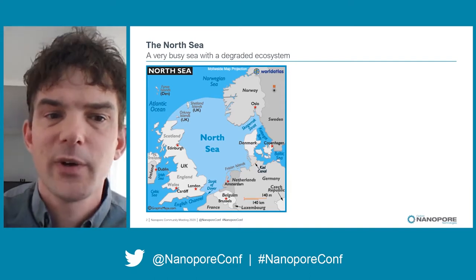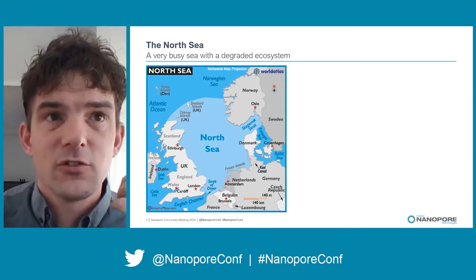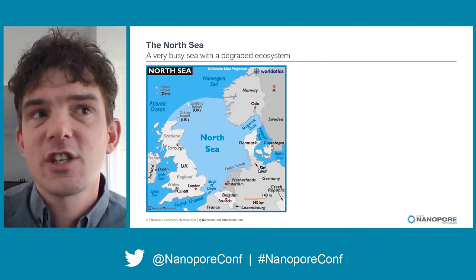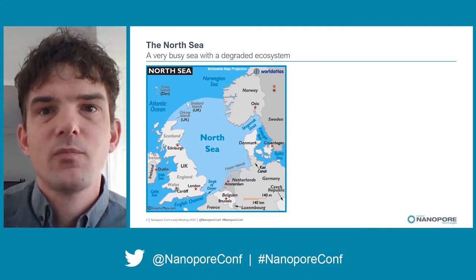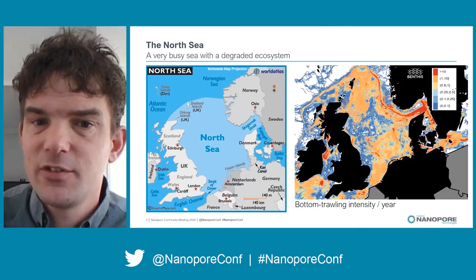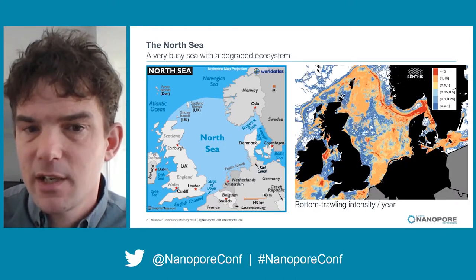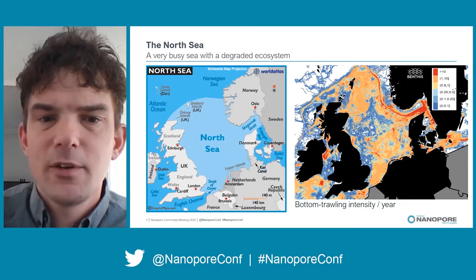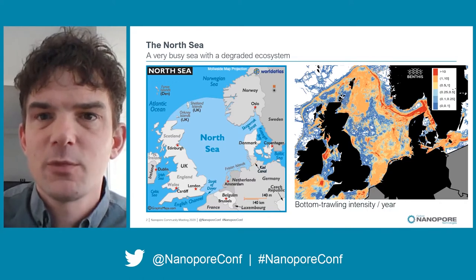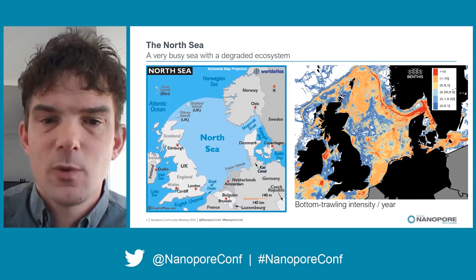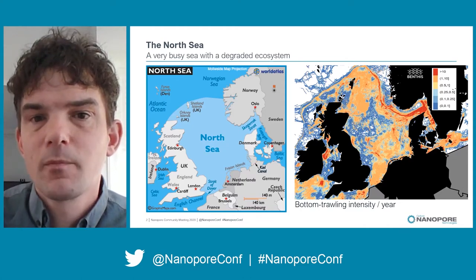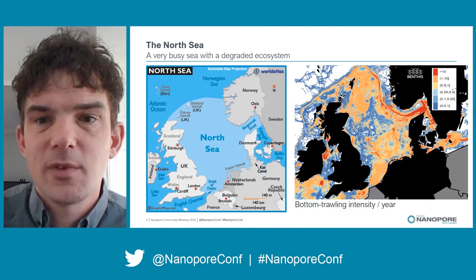There's a lot of shipping, oil and gas drilling, and a lot of fishing going on. All this together has led to the ecosystem of the North Sea being pretty degraded. Looking at a map of fishing intensity for bottom trawling per year, everywhere it's orange or red, the sea bottom is fished multiple times a year. This has led to a degradation of the ecosystem, and I'd like to say a little bit more about that.